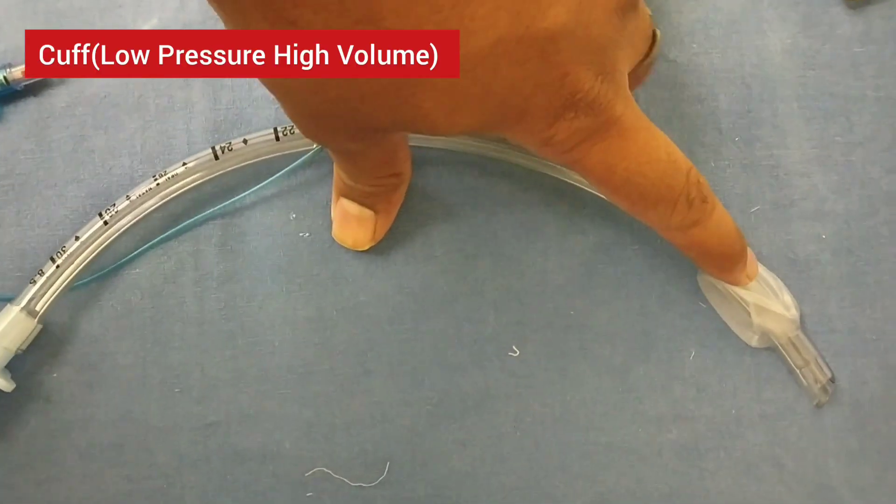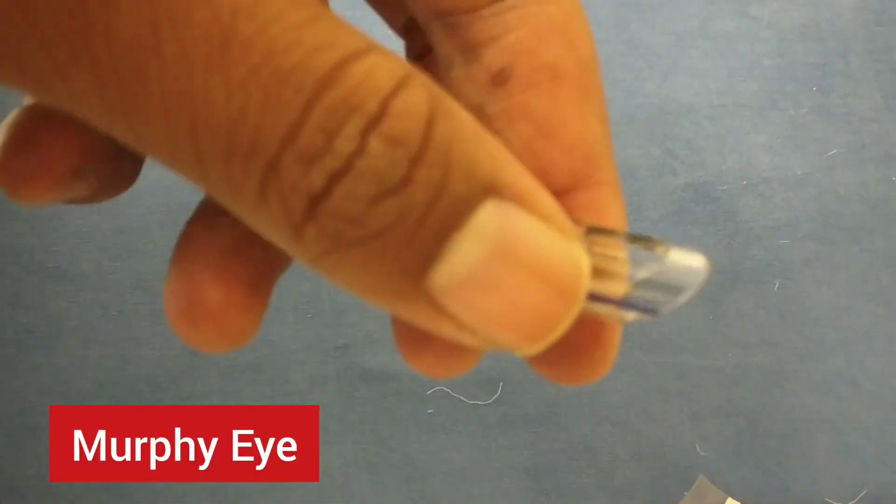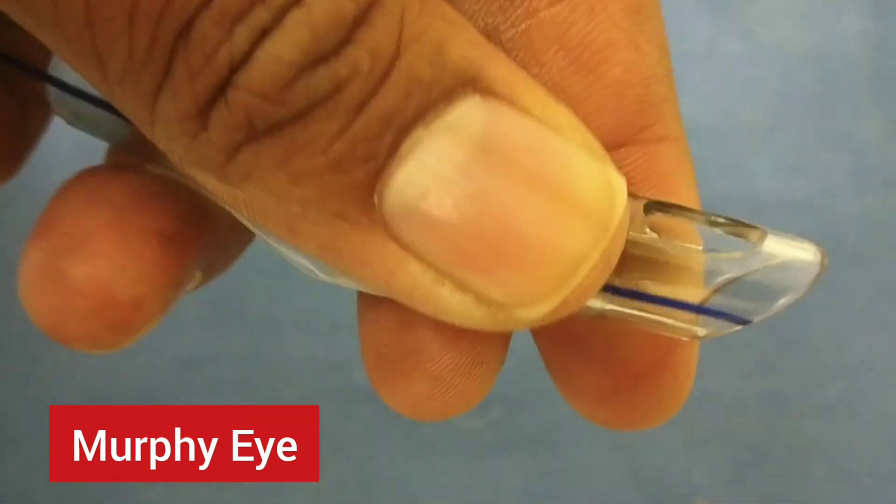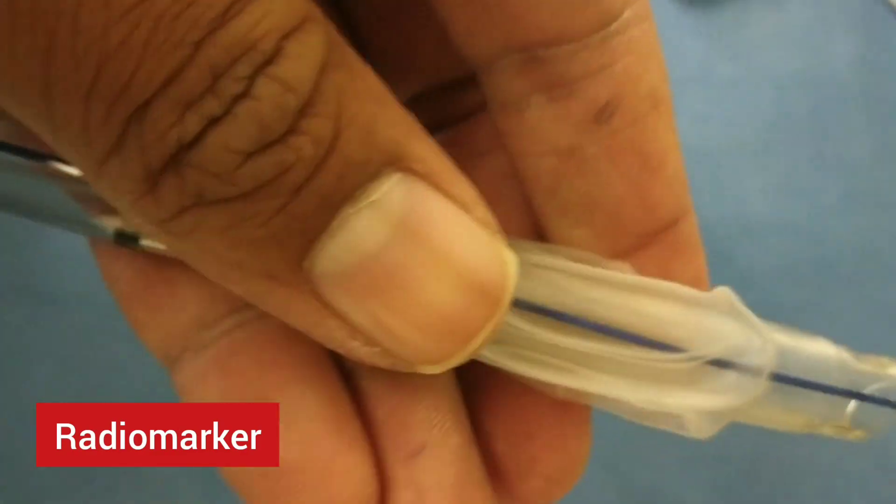After that we can see the cuff, then there is a bevel, and we can see the Murphy's eye. The blue line that we can see is a radio marker which helps in visualization of the ET tube in x-ray films.